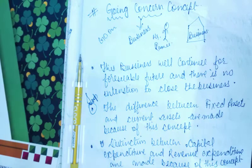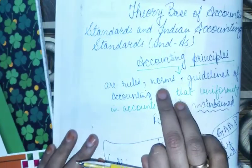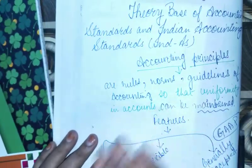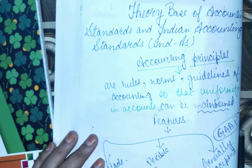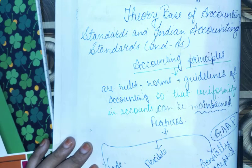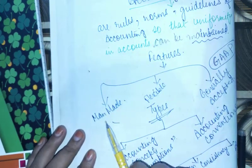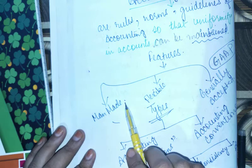Let's revise again the whole topic which we read yesterday. Accounting principles are just rules and regulations or guidelines which we observe to make accounts, record and maintain. It has three features. First, accounts are man-made.